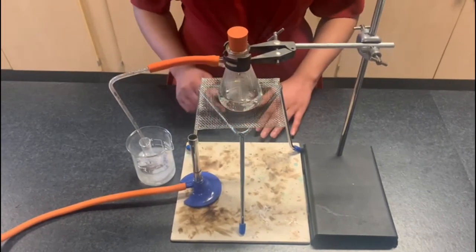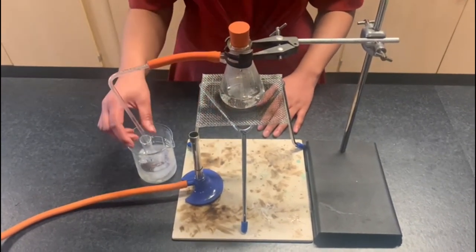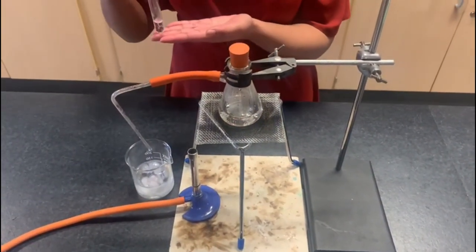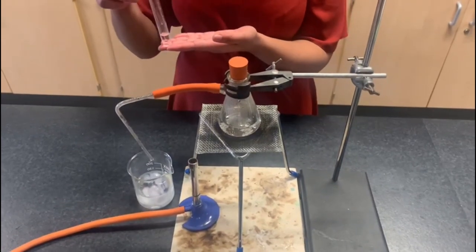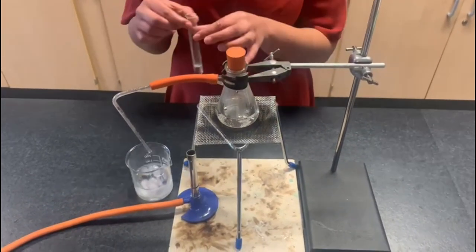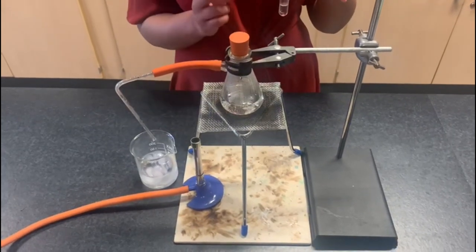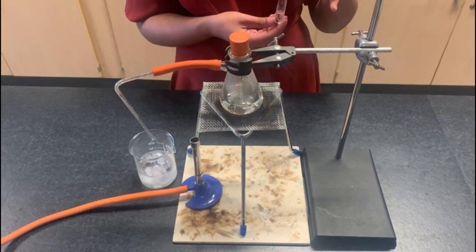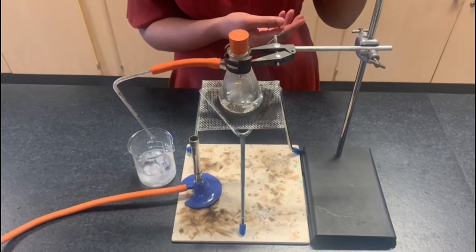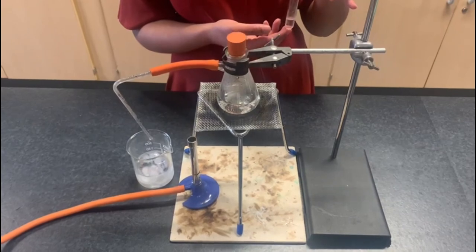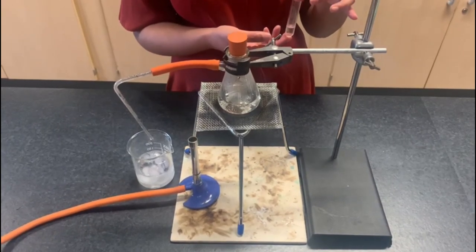This sample you then need to do activity one and two. I have now turned the Bunsen burner off. You need to turn it off once you have collected about two centimeters cubed of your sample. With this sample that you've collected you need to repeat activity one and activity two again. So activity one is to check the pH and activity two would be to collect any solids remaining.